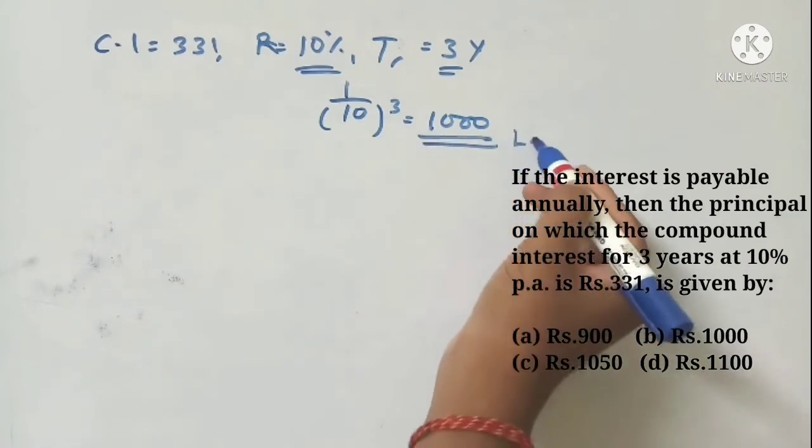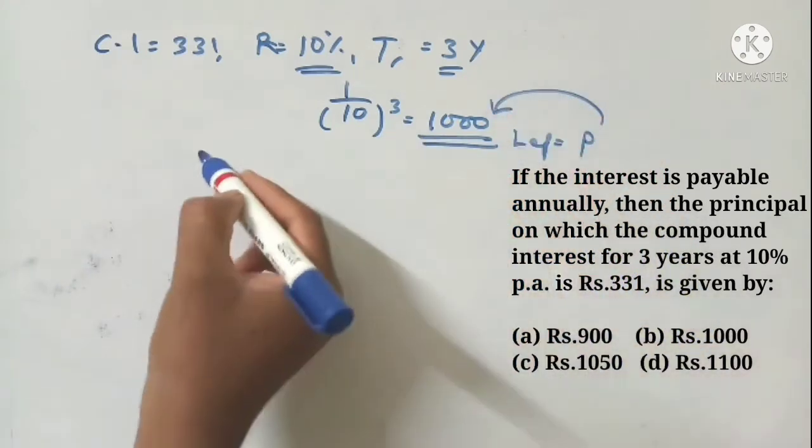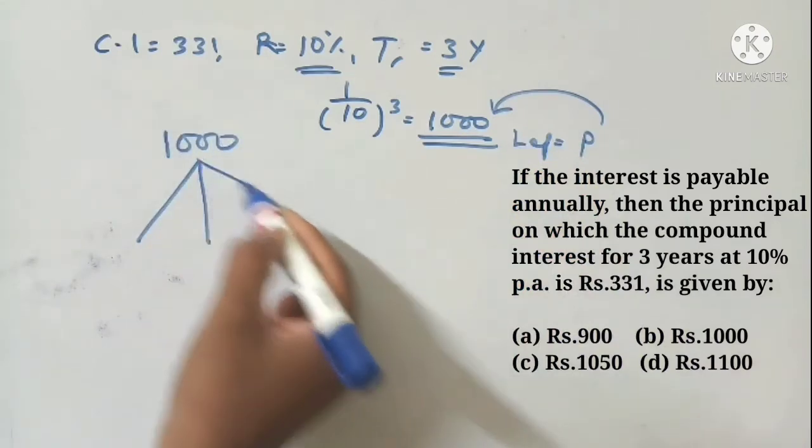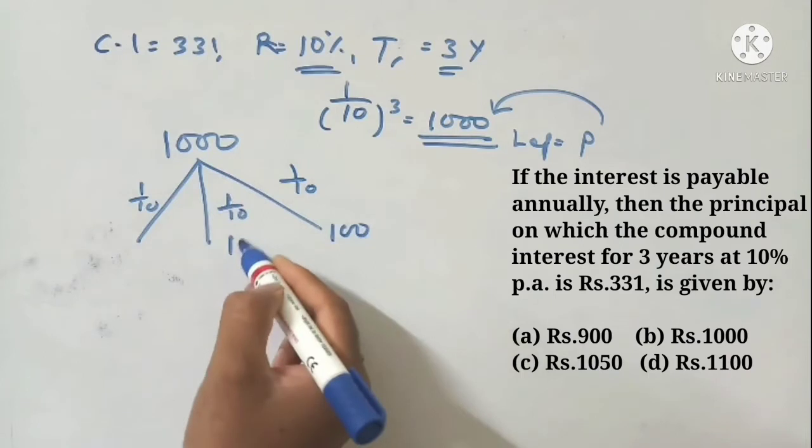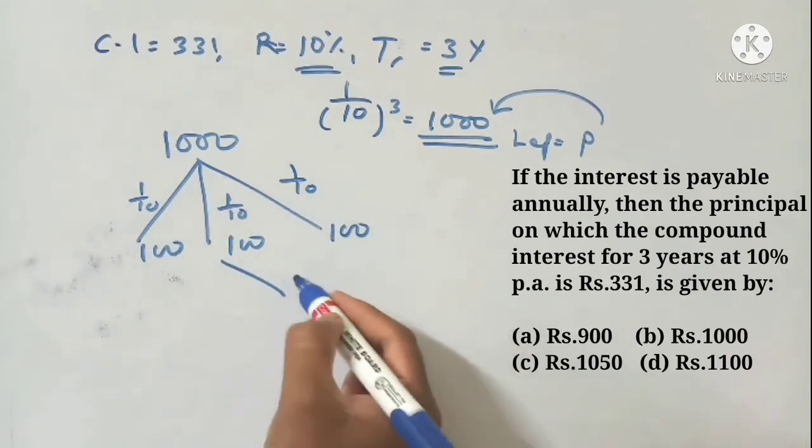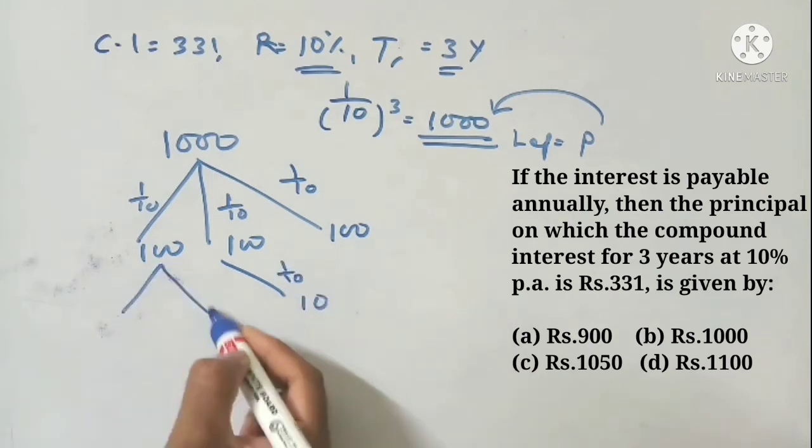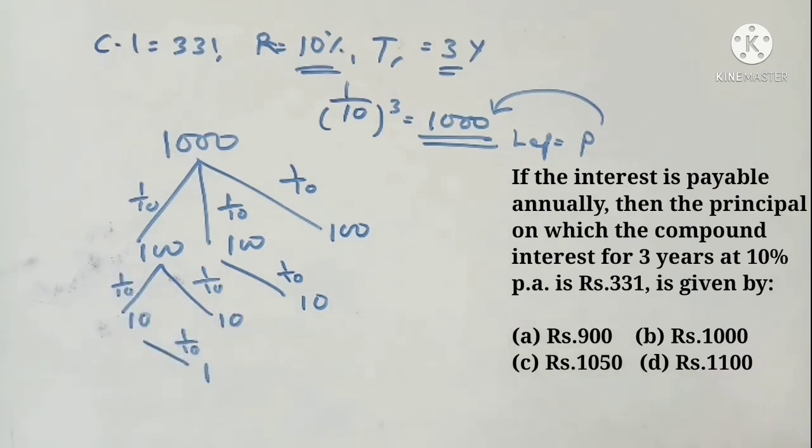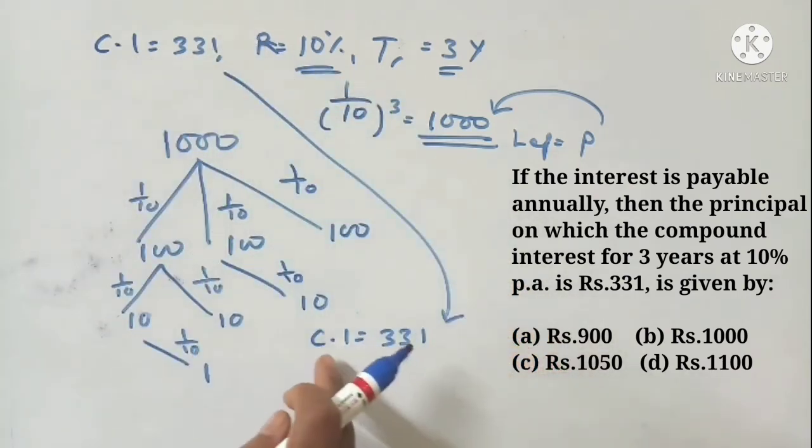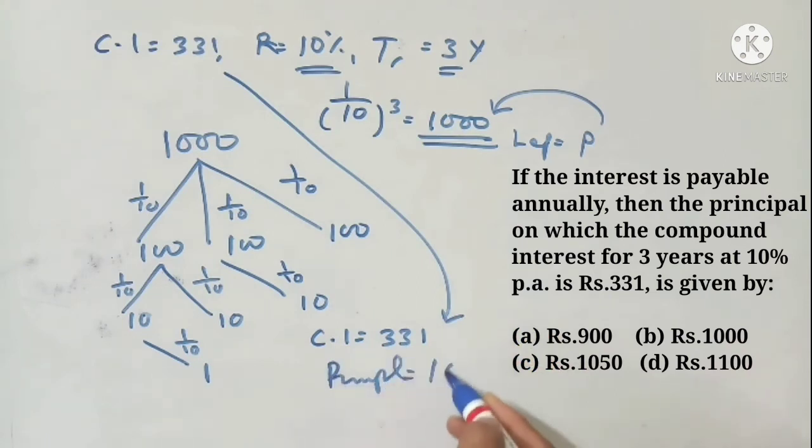So the compound interest Rs.331 is given by... that's 10, 1 by 10, 1 by 10. Okay, 1 by 10, 100, 30. I already have the principal equal to 1000. The answer is basically Rs.1000.